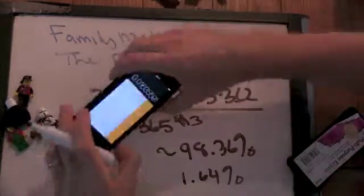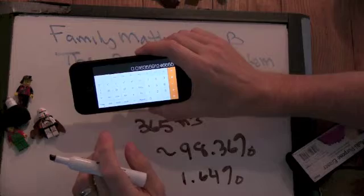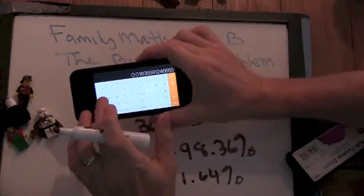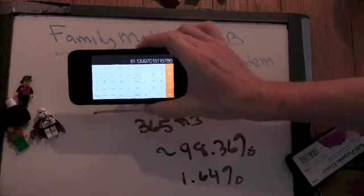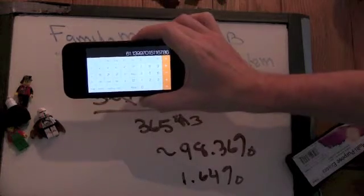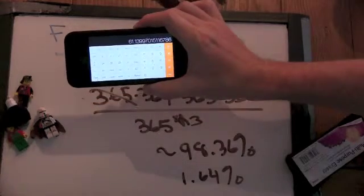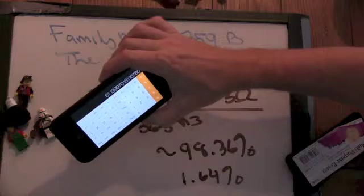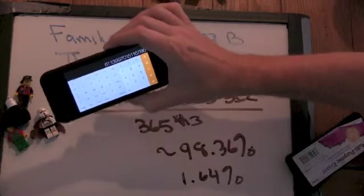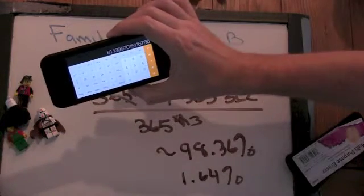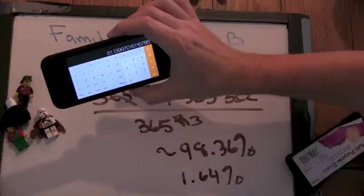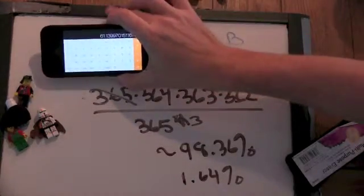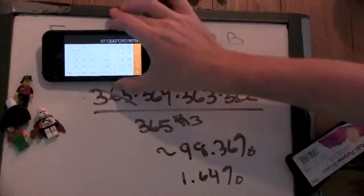It's increasing slowly. But last time with 3 people, we were 1 out of 122. Now we're 1 out of 61. So we want to get to 1 out of 2. So with 4 people, there's actually a 1 in 61 chance.